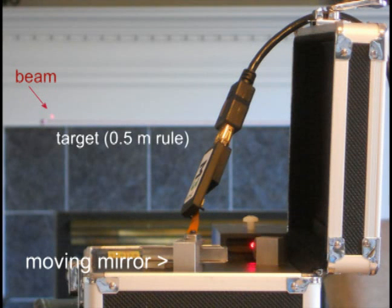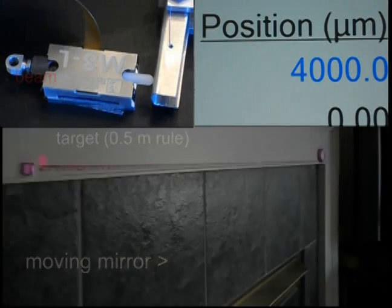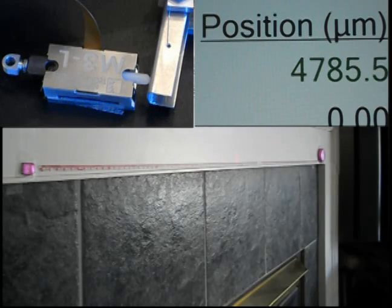Here you can see the beam hitting a target which is 6.7 meters from the moving mirror. Using the intuitive development software included with the developer's kit, we created a routine to move the M3L tip a total distance of 1 millimeter.